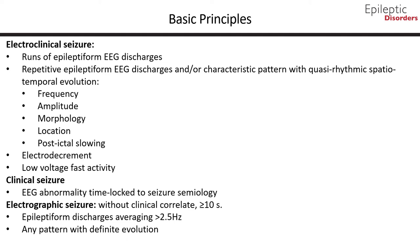Before we show some examples of focal seizures, we will first discuss some basic principles. A seizure consists of repetitive epileptiform EEG discharges at greater than 2 cycles per second, and/or a characteristic pattern of quasi-rhythmic spatial-temporal evolution—that is, gradual change in frequency, amplitude, morphology, and location—lasting at least several seconds, usually greater than 10 seconds.